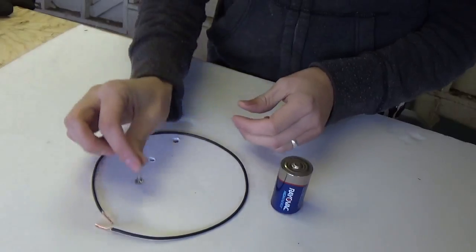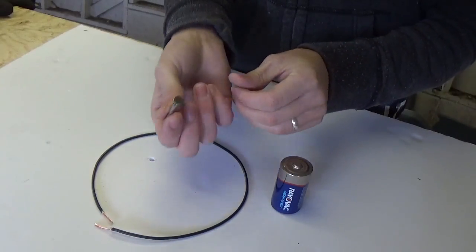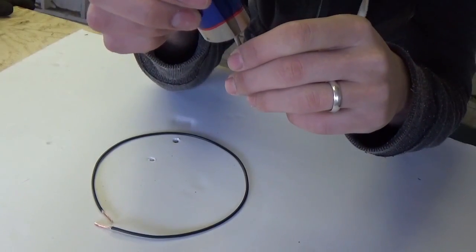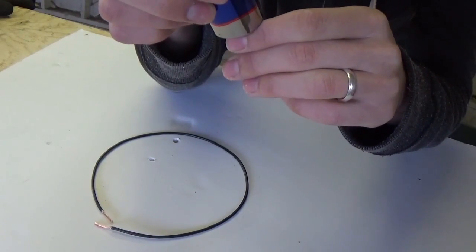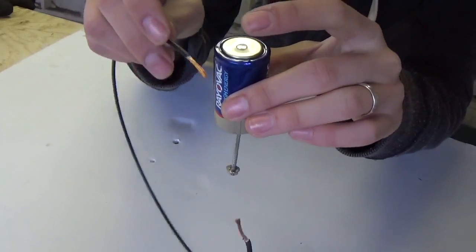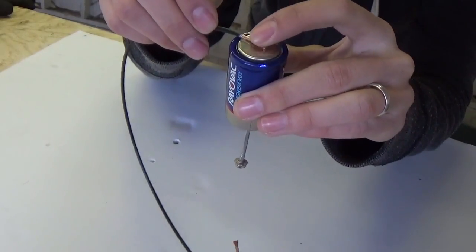What you're going to do is take the magnet, put it on the head of the nail, put the nail onto the bottom of the battery, try to get it right in the center, then take one end of the wire, hold it to the top of the battery.